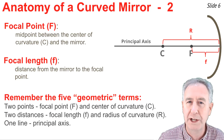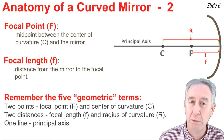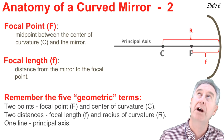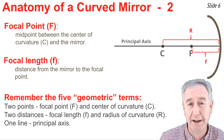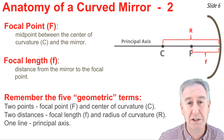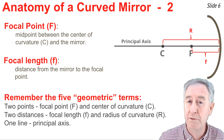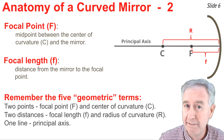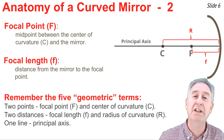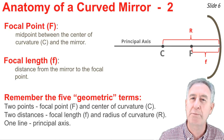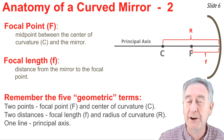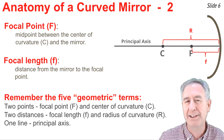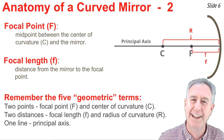For best results, you need to understand five geometric terms: two points — the focal point F and the center of curvature C; two distances — the focal length f and the radius of curvature r; and finally, the principal axis.